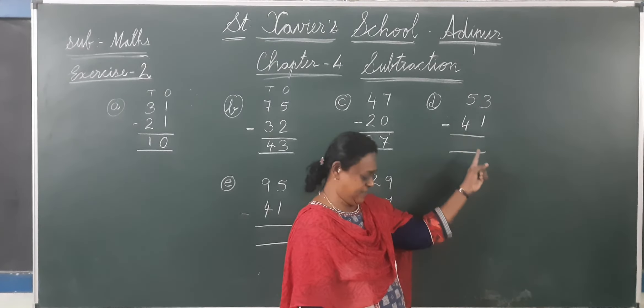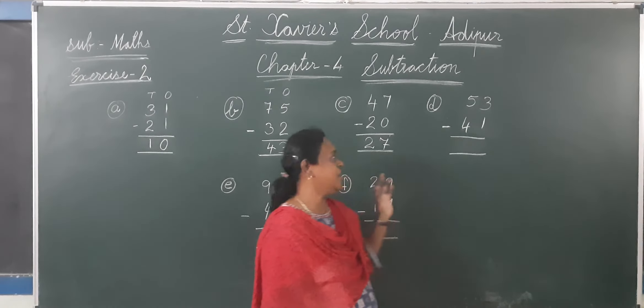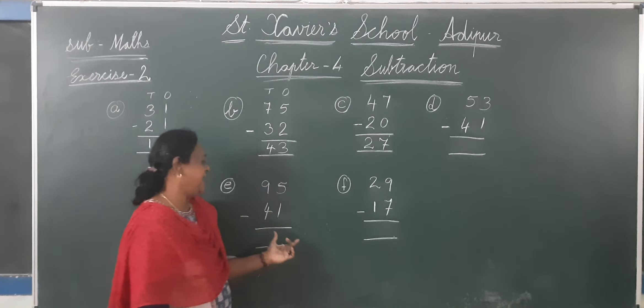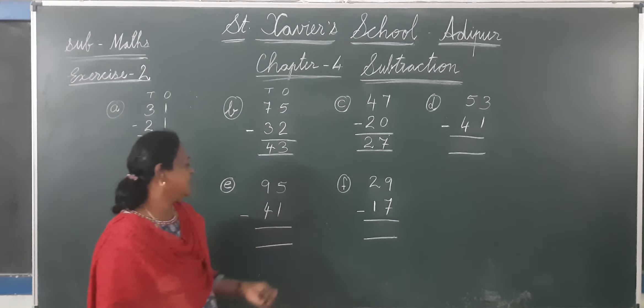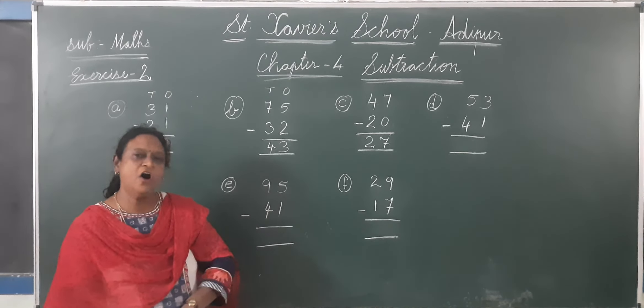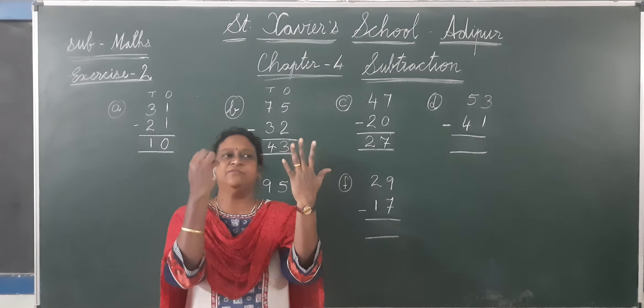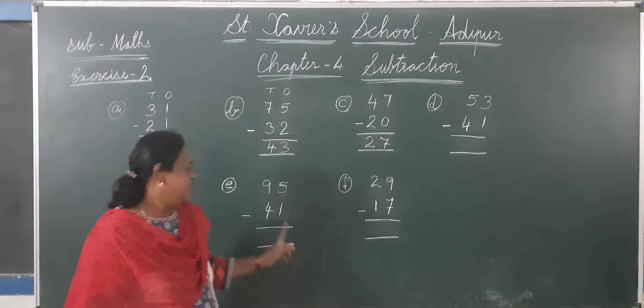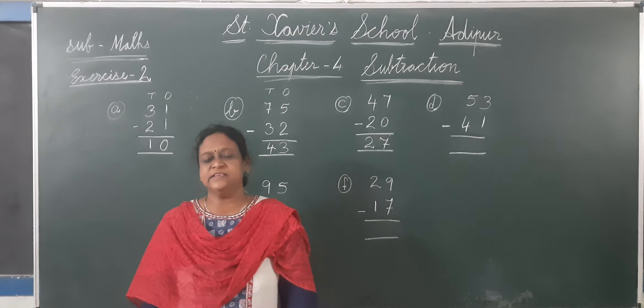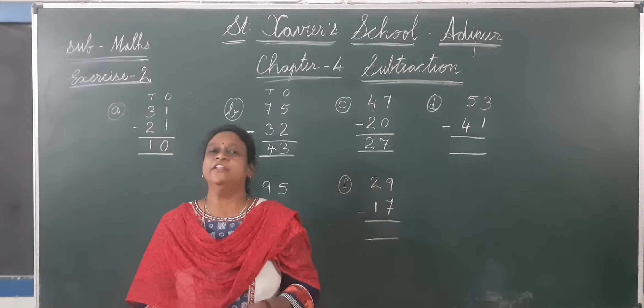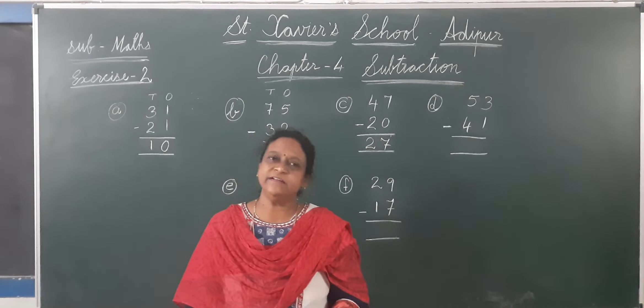Now you can see here. 53 minus 41, 95 minus 41, 29 minus 70. 5 minus 1 is 4. 9 minus 4 is 5. Fingers ko count karke aapko homework karna. This first and second exercise you have to write in your fair notebook. Okay children, thank you.